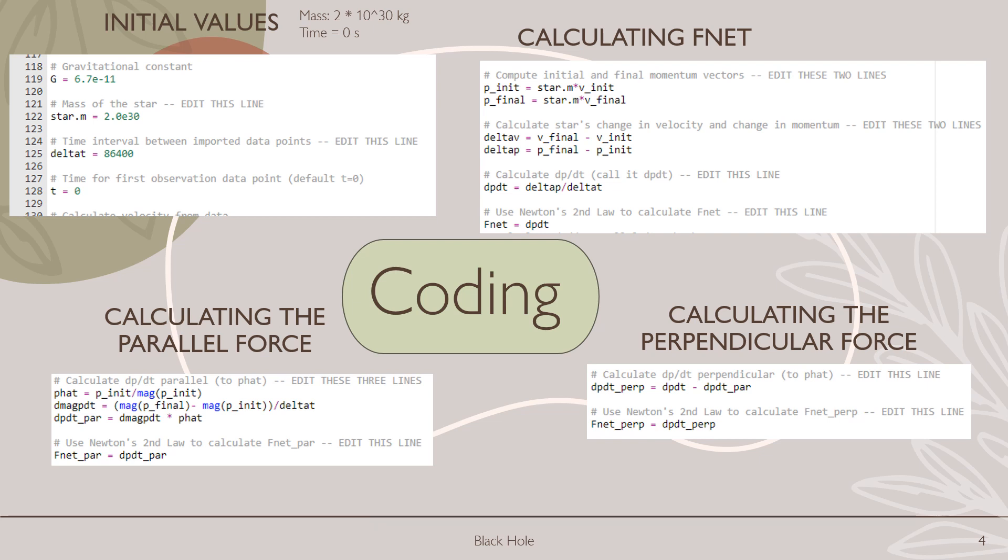Now moving on to the components. In the bottom left, we'll calculate the parallel force. To do this, we're going to find the change in magnitude of our p initial and our p final. Multiplying that by p hat will get our parallel force component. Now lastly on the bottom right, we'll calculate the perpendicular force. Since we know net force is the sum of the parallel force and the perpendicular force, we can simply just subtract the parallel force from the net force to get our perpendicular force.